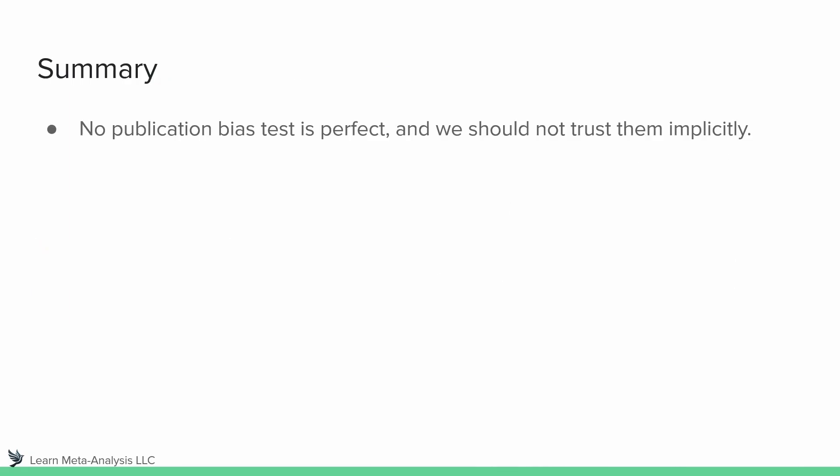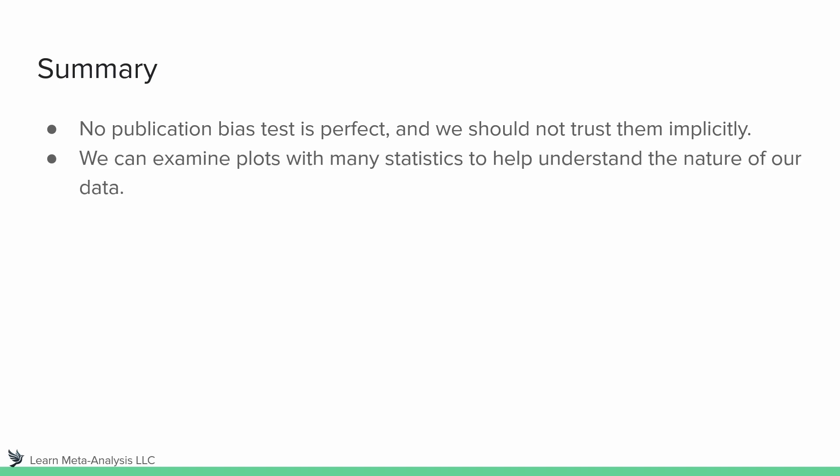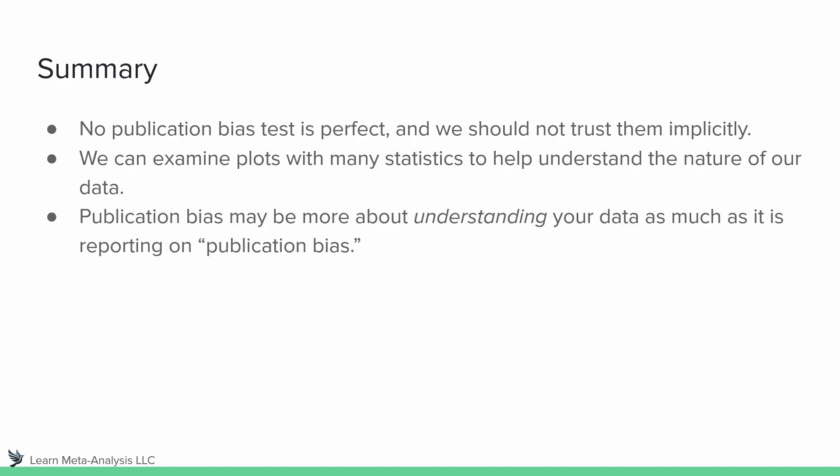So what does this all mean? No publication bias test is perfect, at least that I have ever heard of, and I don't think we should trust them implicitly. Just because a result is significant doesn't mean your whole analysis is invalid — it really comes down to considering the context. We can examine plots and use many different statistics to help us understand the nature of our data. That's why I think of publication bias as helping us build a deeper understanding of our data set. You should report publication bias results and tests with your analysis — it's a standard in the field — but it really comes down to how you analyze and interpret it.